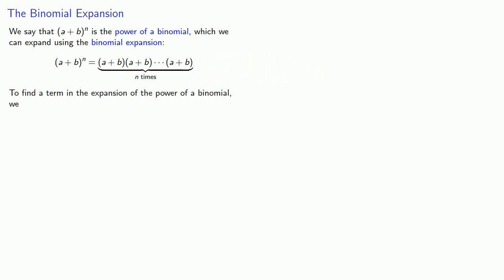To find a term in the expansion of the power of a binomial, we need to do two things. First, determine which factors we need to choose, and then determine the number of ways we can choose those factors.